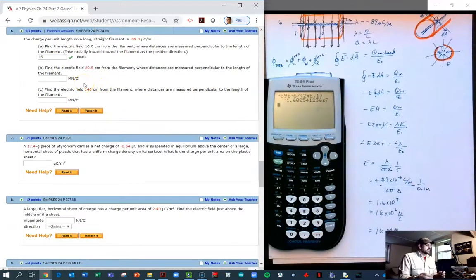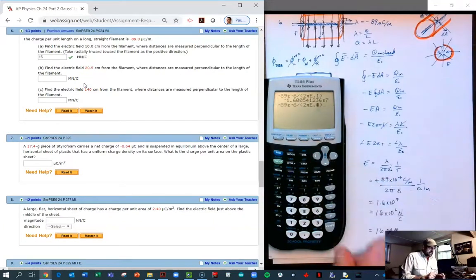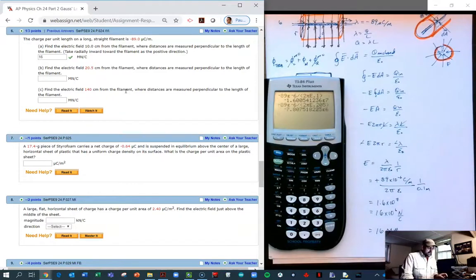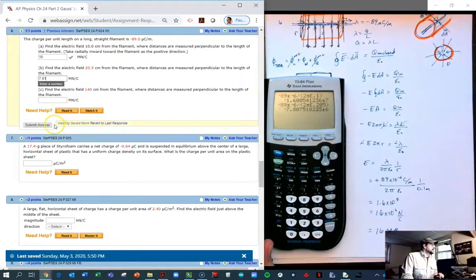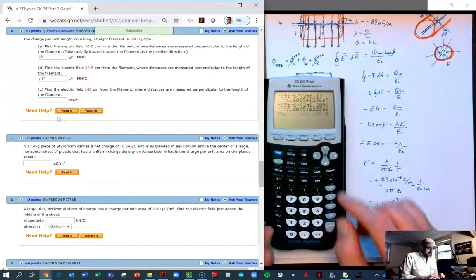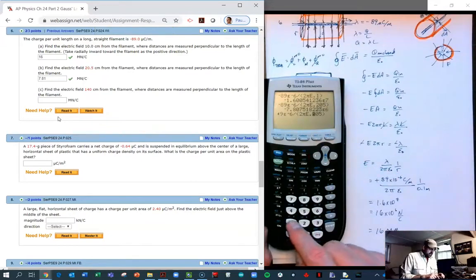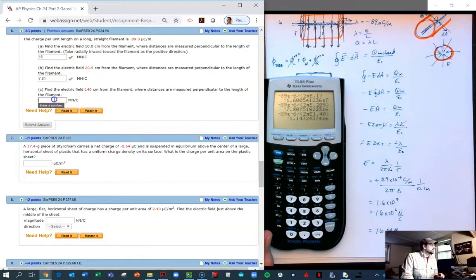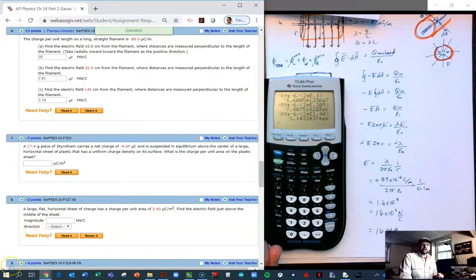And now to answer the other problems, all we have to do is go back and change this value here. So my next value is 20.5. So 0.205, close parentheses. Delete that extra guy. And now this is going to be 7.8. Again, forgive the negative there. 7.81 mega newtons. Times 10 to the 6. Again, my calculator is in scientific notation just to make that easy. And then the last one is going to be far away at 140. So that would be 1.4 meters. 1.40 meters. And this is going to be 1.14. That's that for that problem. 1.14, 1.15.